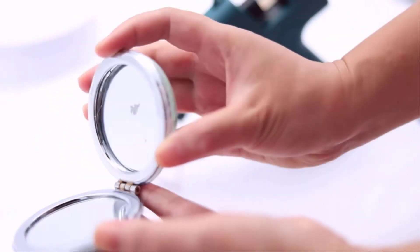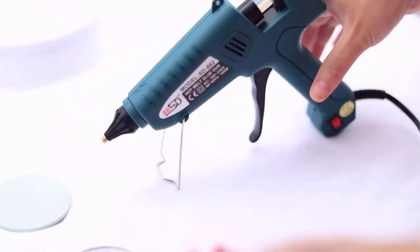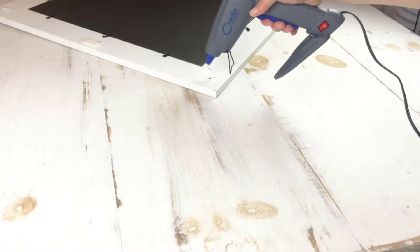There are a few things to consider when purchasing a hot glue gun: the size of the glue gun, the type of projects you'll be using it for, and your budget. The most important thing to consider is the size.